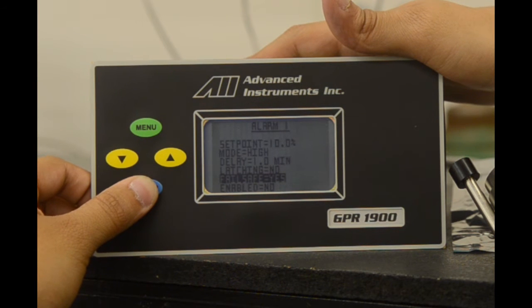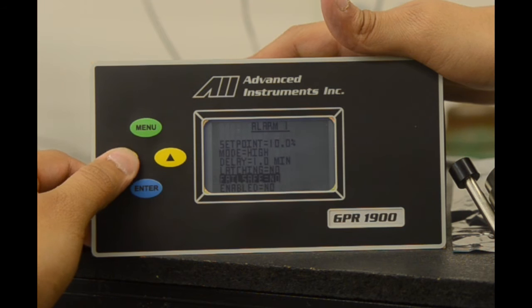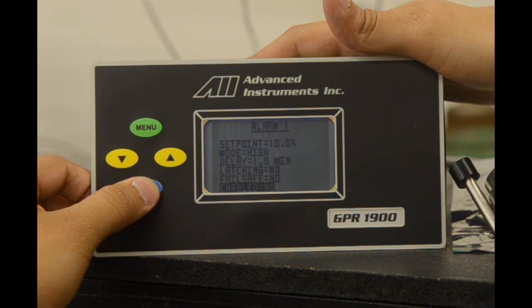And last, we have an enabled option. If we scroll down to the enabled option, it is currently on no. This disables alarm one, however, not alarm two. Again, enter to select to be enabled or disabled.